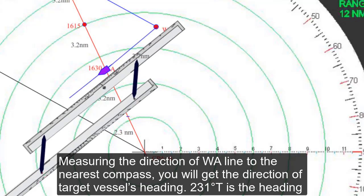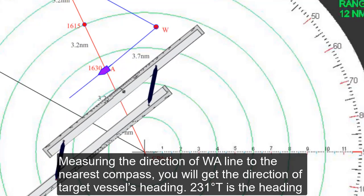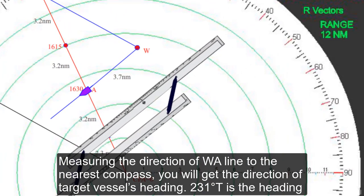Measuring the direction of WA line to the nearest compass, you will get the direction of target vessel heading.